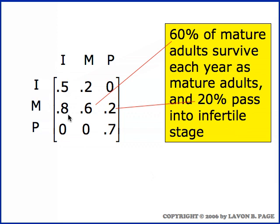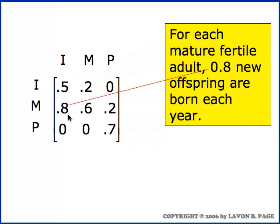What do you suppose the 0.8 represents? That's new births. On average, for each mature individual there will be 0.8 new offspring born during the year — so that's the reproductive process.